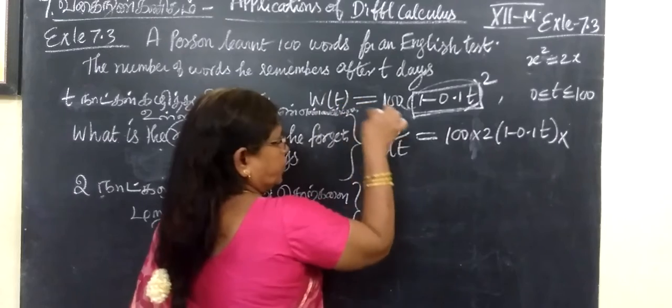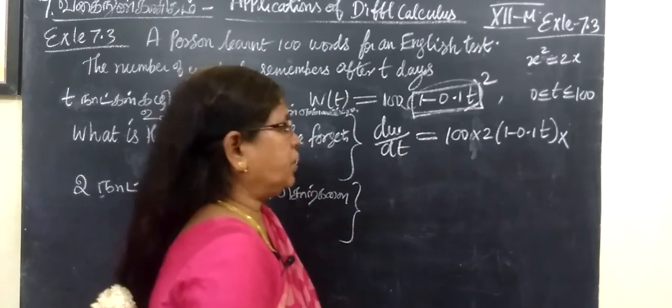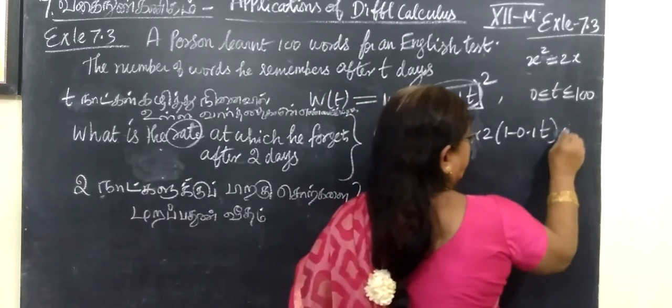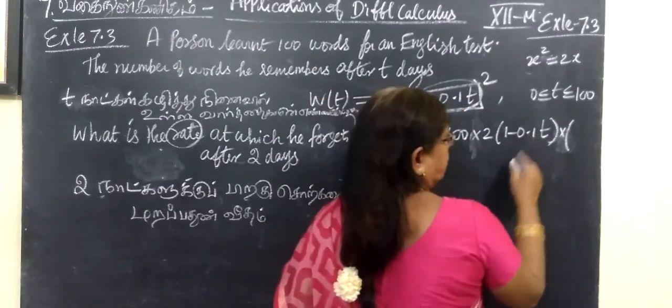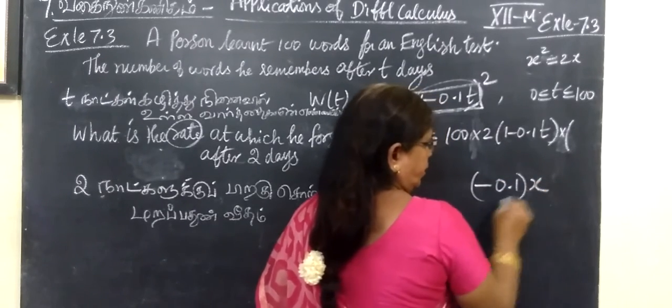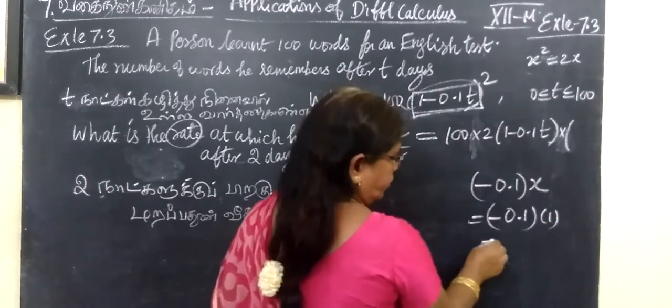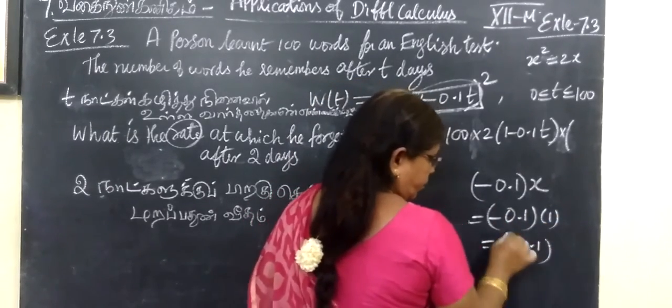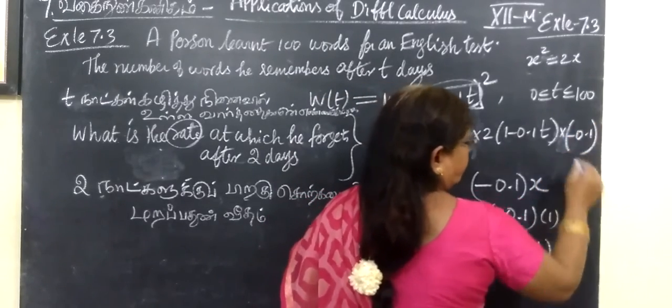We can differentiate. That will be t then. We need to differentiate, the number of words. That is what is the rate. Given the number of words, to differentiate the number of words, x is equal to minus 0.1.